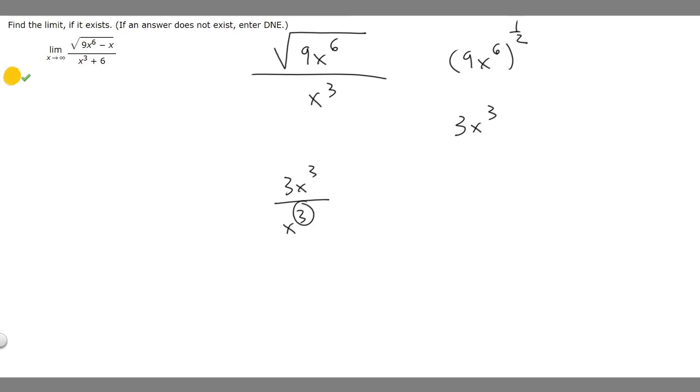That means what we're going to do is just look at our coefficient out front. In this case it's just going to be 3 divided by 1. 3 divided by 1 is going to equal 3. The answer to this one is just going to be 3.